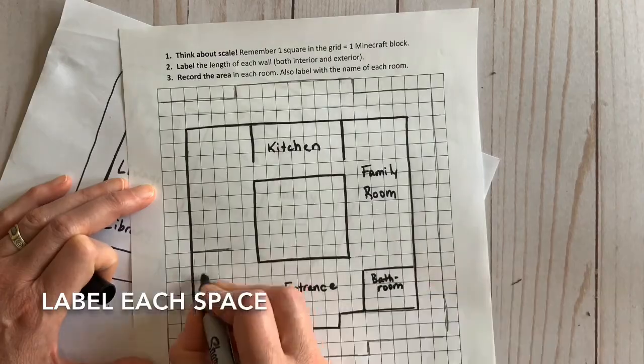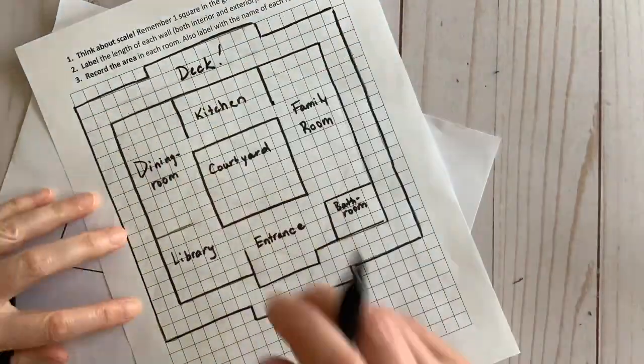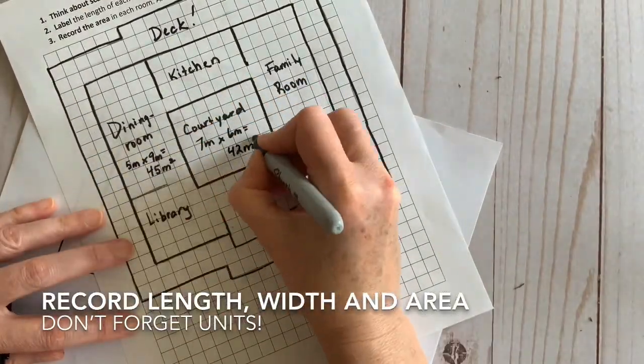Finally, label each space and record the length, width, and area. Don't forget your units.